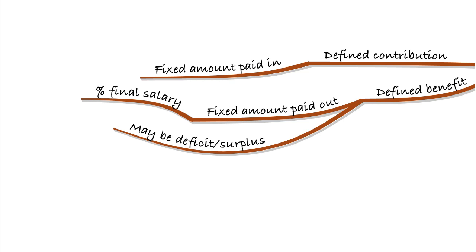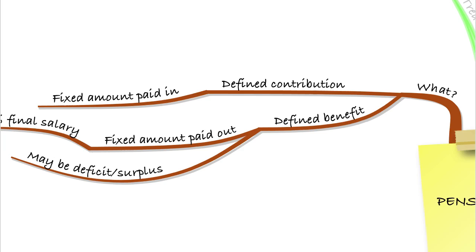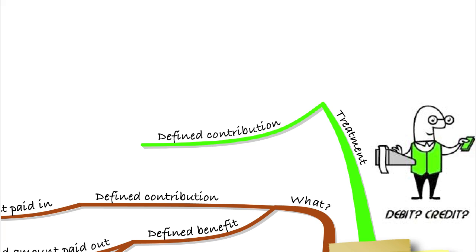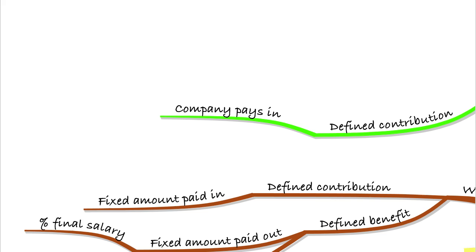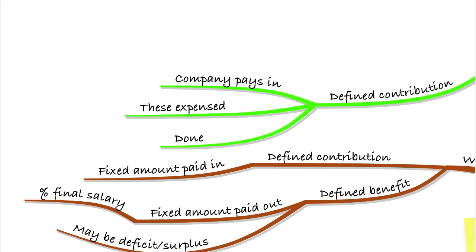So those are the two different types. Defined contribution: an amount is paid in, then whatever's left at the end is paid out to the pensioner. A defined benefit scheme says how much is going to be paid out. Hopefully there'll be enough; if not, the business will have to make up the difference. For a defined contribution scheme the treatment is really straightforward — the company pays an amount in each year, that amount is expensed in the period as a pension expense, and that's it, because they have no ongoing responsibility to make good any payments.